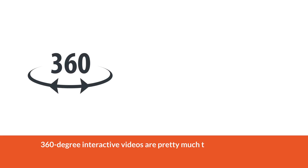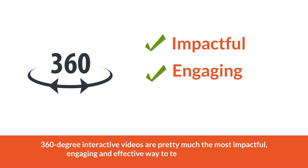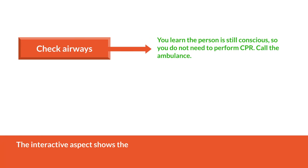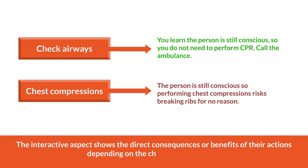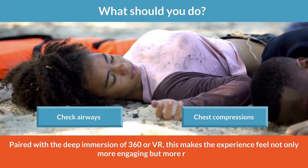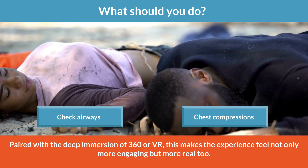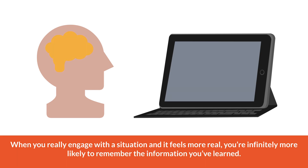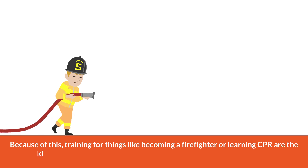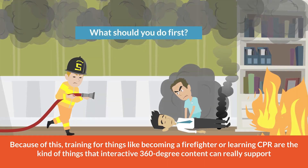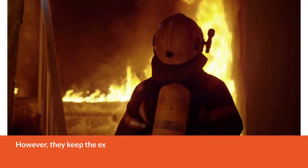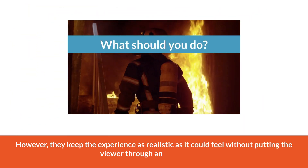What are the benefits of 360 interactive video? 360 degree interactive videos are the most impactful, engaging, and effective way to teach or test viewers about how to handle real life situations. The interactive aspect shows the direct consequences or benefits of their actions, depending on the choices they've made. Paired with the deep immersion of 360 or VR, this makes the experience feel more engaging and more real. When you really engage with a situation and it feels real, you're infinitely more likely to remember the information learned. Training for things like becoming a firefighter or learning CPR are exactly the kinds of things interactive 360 degree content can really support. It removes all risk from the situation, while keeping the experience as realistic as possible, without putting the viewer through any real trauma.